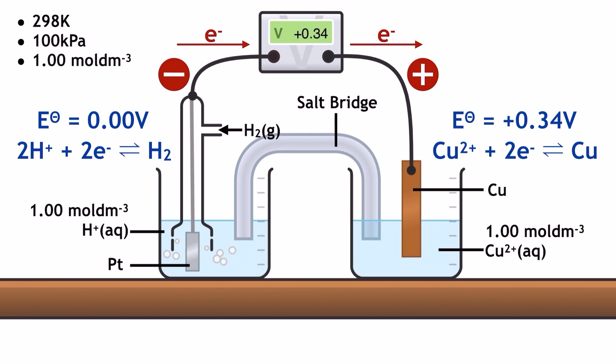The direction of flow of electrons is from anode to cathode — that is, from the negative electrode to the positive electrode. The salt bridge, labelled in the middle, completes the circuit by transferring ions, not electrons. That's a common mistake.